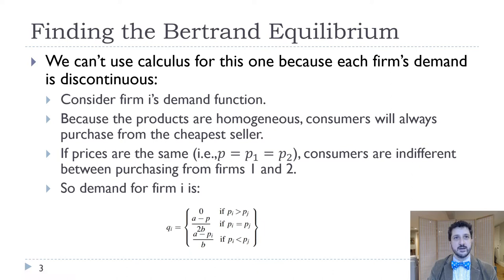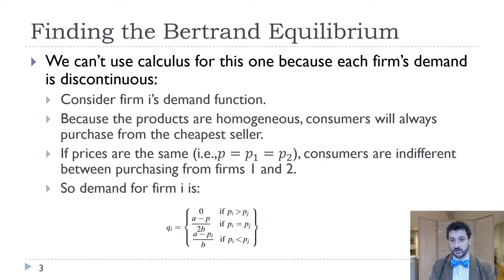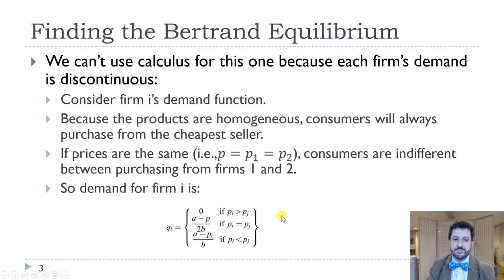The important assumption is that consumers always purchase from the cheapest seller. If products are the same and one price is lower, that's who consumers choose. If prices are equal, 50% of consumers go to each firm. This gives us a discontinuous demand curve: if your price is higher than your competitor's, you sell zero; if lower, you sell the entire market demand, A minus P over B; if equal, you sell half that, A minus P over 2B.